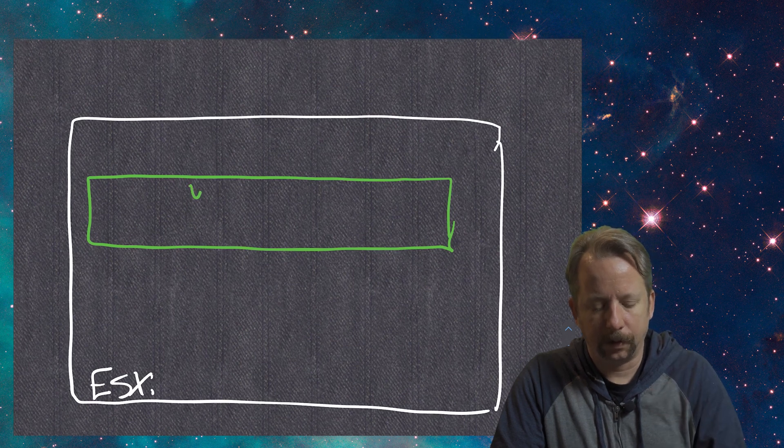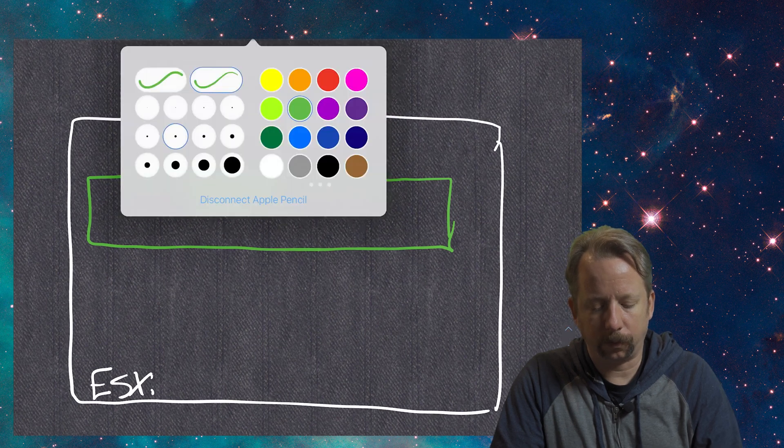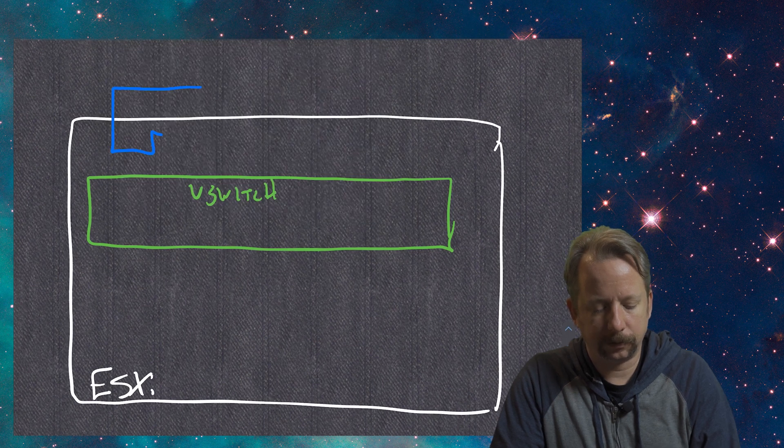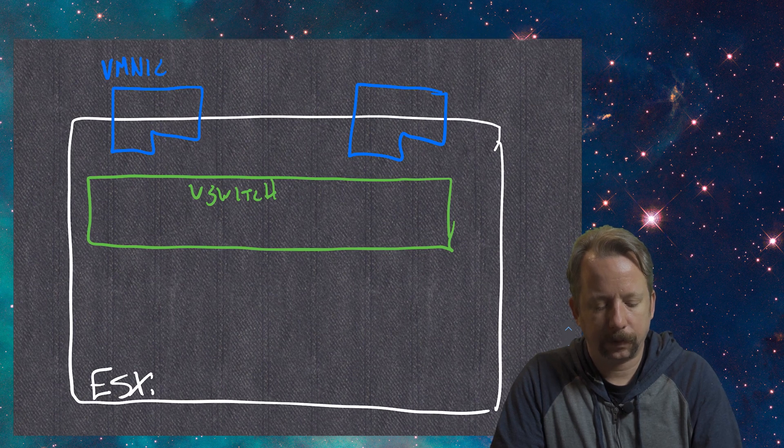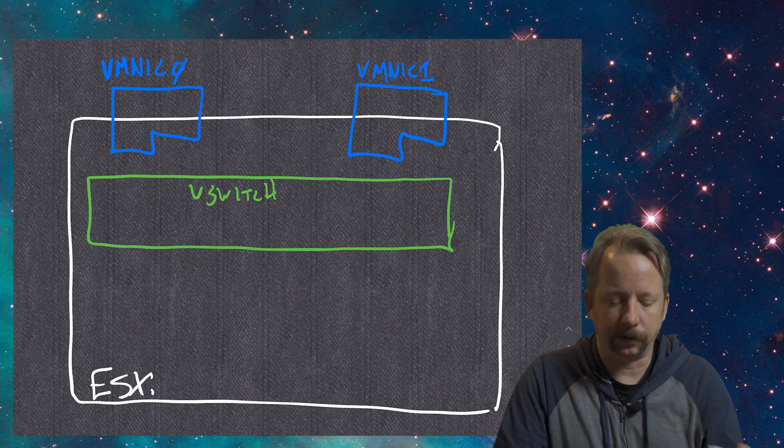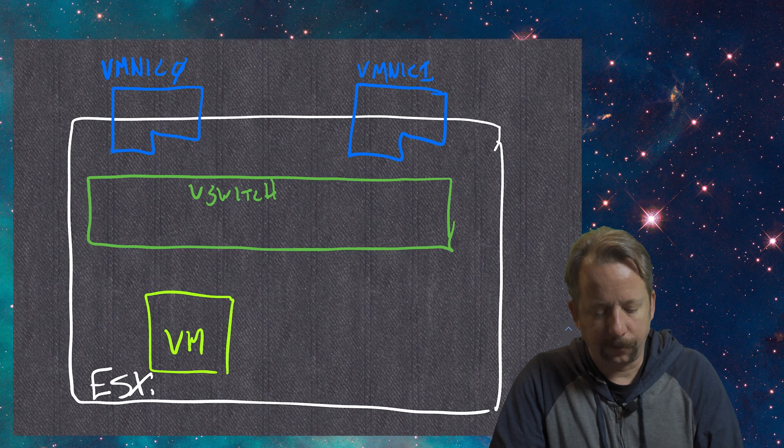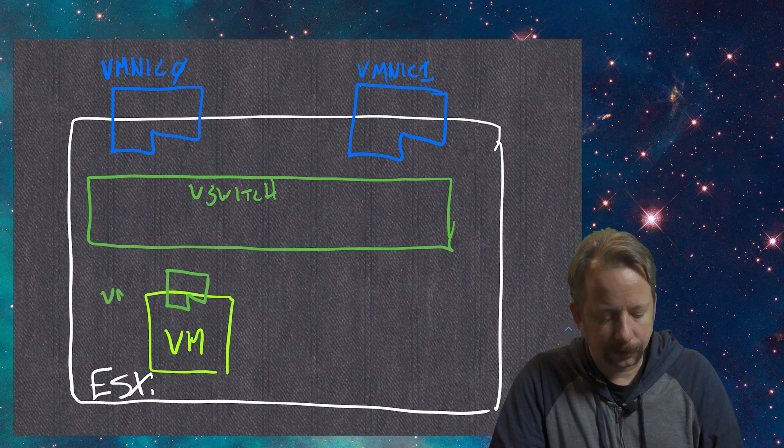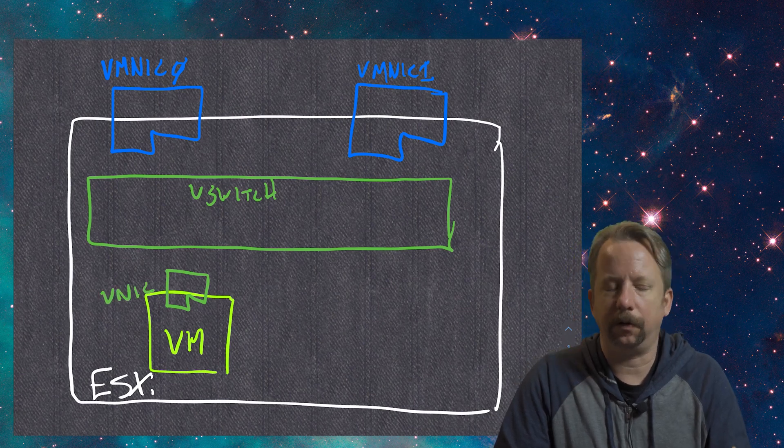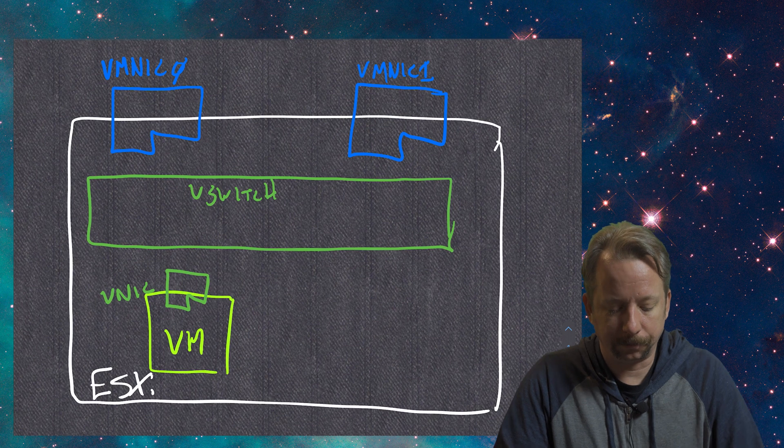We're going to have some network interfaces. VMware calls the physical NICs VM NICs. This is VM NIC 0 and VM NIC 1 - they start numbering with zero. We'll also have some virtual machines. The VM itself is going to have a vNIC. The physical NIC is the VM NIC - I don't know why, it's kind of confusing. I would think VM NIC means the NIC on the VM, but they didn't ask me when they were naming these things.